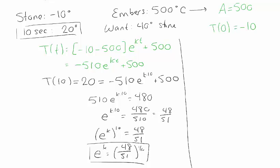Now that I know e to the k, I can make my temperature equation a little bit more precise. It's minus 510 e to the k to the t plus 500 because remember when I have a power to a power I multiply. And now I know that e to the k is 48 divided by 51 to the 1 over 10. So when I raise that to the power t, I just multiply it by that power. And this is my more precise version of my temperature equation.